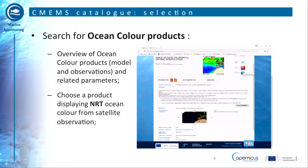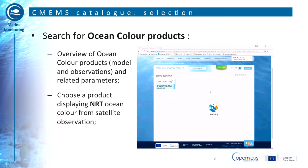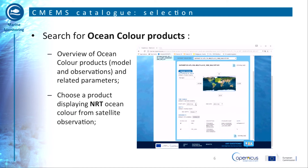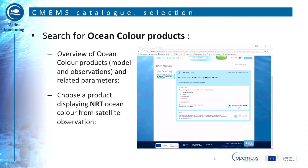You access the product page of the selected product. To reach the Python command line, click on 'Download Product'. You can modify the requested date and then click on 'Download'. You can either download manually by clicking on the download button indicating the size of the file, or look for a script that will give you the possibility to automatically download files. Choose the dataset and click on the button 'View Script'.